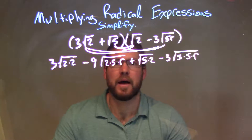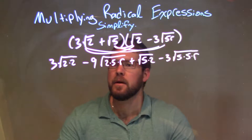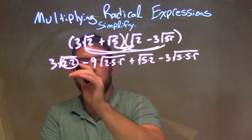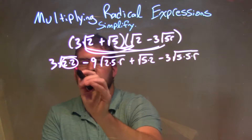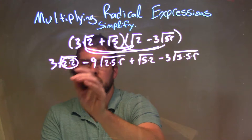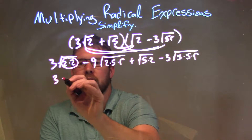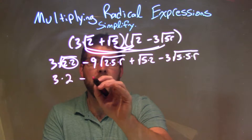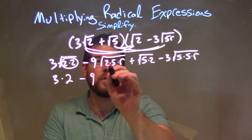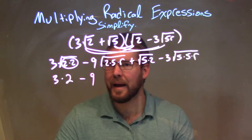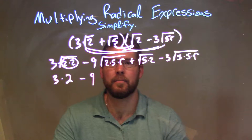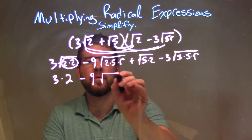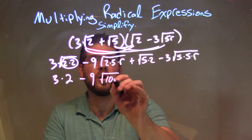So now we need to simplify. We have a pair of 2s right here — a pair of 2s represents an individual on the outside, so square root of 2 times 2 is just 2. So 3 times 2 right there. For the minus 9 term: 2, 5, and r — there are no pairs, so I'm going to multiply 2 times 5 to get square root of 10r right here.